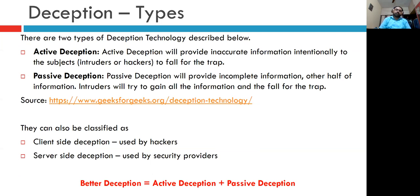In deception there are two types: active deception and passive deception. In active deception, inaccurate information is intentionally provided to hackers to make them fall for the trap. In passive deception, incomplete information is provided, so intruders try to gather all information and fall for the trap. Deception can also be classified as client-side deception, used by hackers to deceive users, and server-side deception, used by security providers to deceive hackers. The better deception technique uses a combination of both — providing inaccurate and incomplete information to hackers.